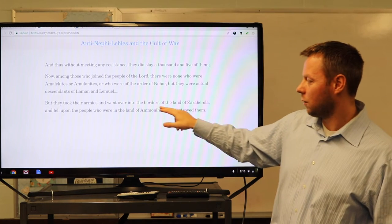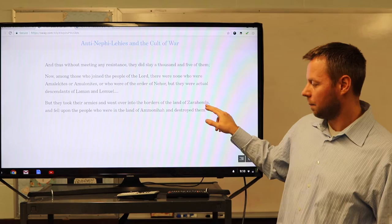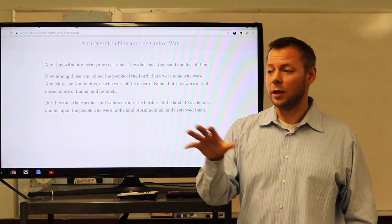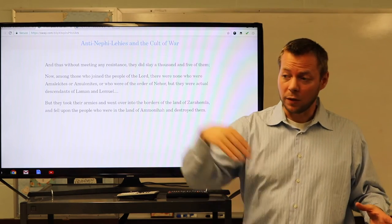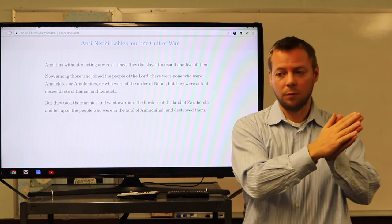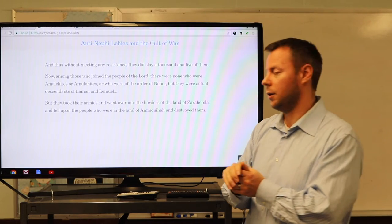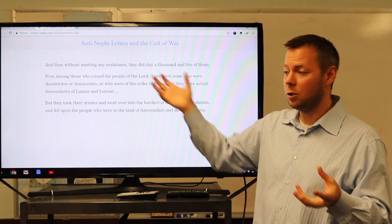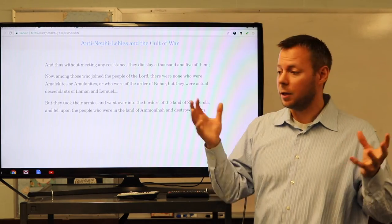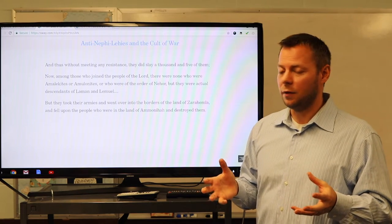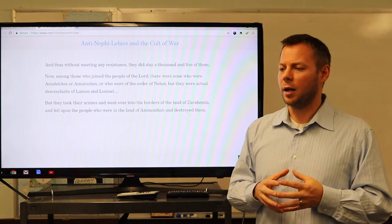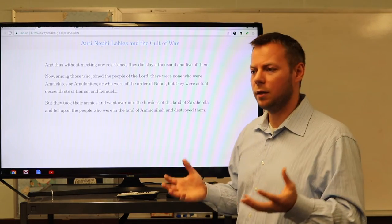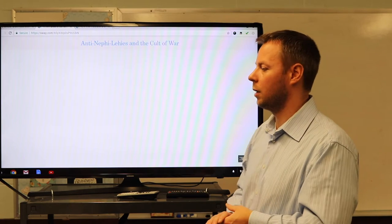But what did the others do? The others took their armies and they went over into the borders of the land of Zarahemla and fell upon the people in the land of Ammonihah and destroyed them. Recall that we talked about the destruction of Ammonihah in the context of geography. And remember, they came on the borders of the coast and they came in the incursion. This is kind of an odd thing to do, right? They're trying to dispose this king. They apparently do it with no resistance. And they kill a thousand people, but then they go and they go attack Ammonihah. It doesn't make a lot of sense. They've accomplished their goal. Why do they got to go kill a bunch of people in Ammonihah? Here's the reason.